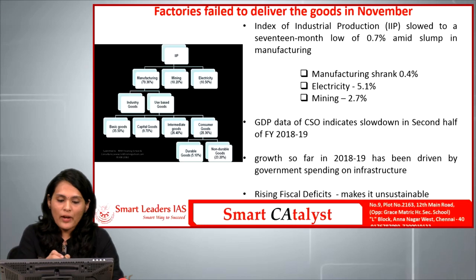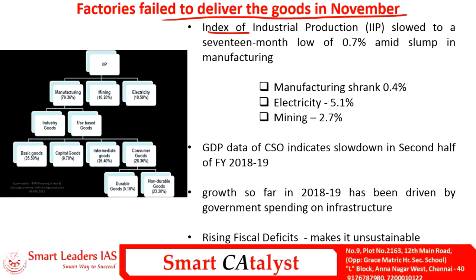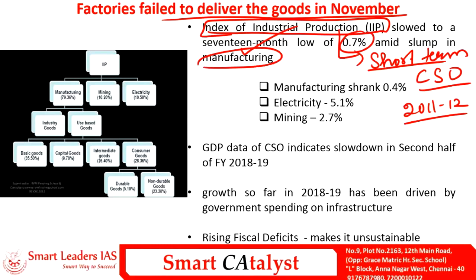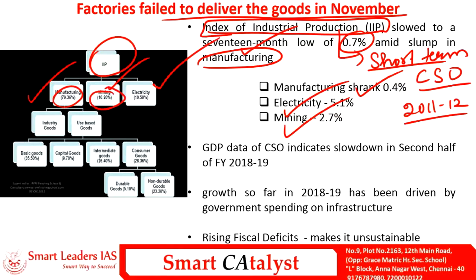The last article is 'Factories Fail to Deliver the Goods in November,' which talks about Index of Industrial Production data. The IIP tells about the short-term growth of industries in our country. This data is released by CSO under the Ministry of Statistics and Programme Implementation, with a base year of 2011-12. The data for November showed a 17-month low of 0.7 percent amid a slump in manufacturing. The manufacturing sector shrank by 0.4 percent, electricity by 5.1 percent, and mining by 2.4 percent. IIP is broadly divided into three sectors: manufacturing (79.3% weightage), mining (10.2%), and electricity (10.5%).